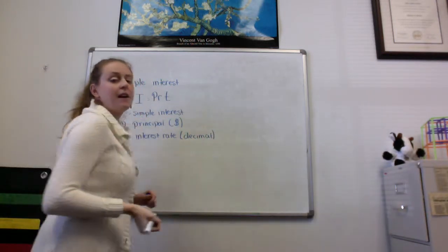R stands for interest rate. We're always going to want to write this as a decimal when we plug it into our formula. So for instance, if I was given 5%, I would write that as .05. And we'll see that in a second when I work a problem.